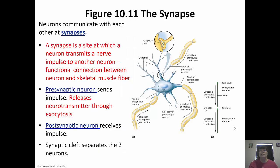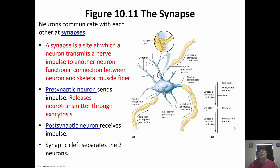Neurons communicate with each other through synapses. A synapse is a site where a neuron transmits a nerve impulse to another neuron — basically the space between neurons. It's also a functional connection between the neuron and a skeletal muscle fiber, which is how muscles contract. There's a small space between them called the synaptic cleft. There are two types of neurons at a synapse: pre-synaptic, which sends the impulse and releases the neurotransmitter through exocytosis, and post-synaptic, which receives the impulse. We'll talk about what happens next in part two of this chapter.